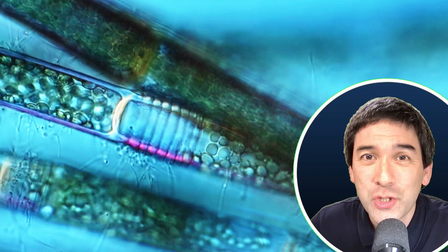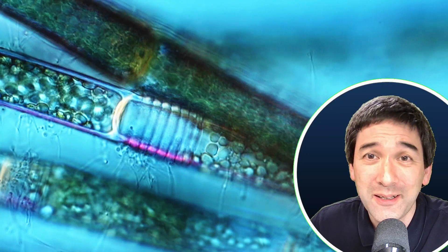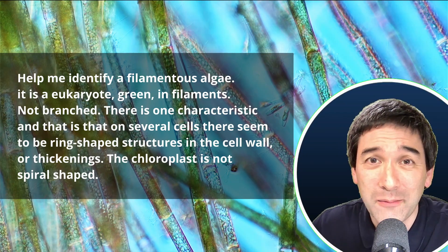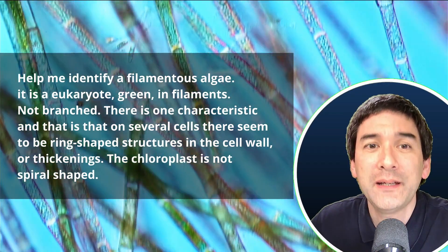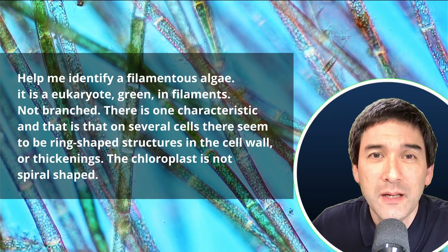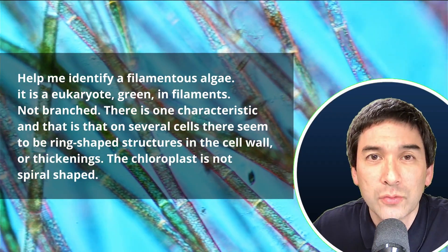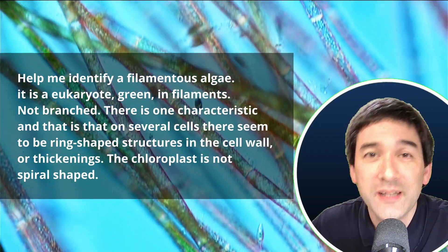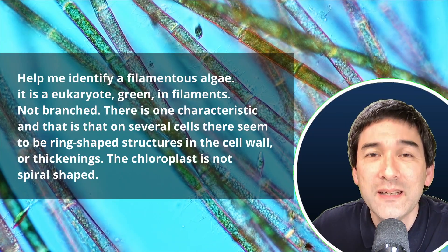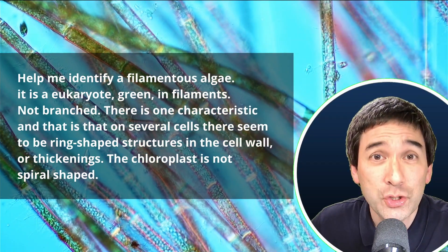First, go into ChatGPT and get some names and then type in the names and then basically hope to be able to identify it. And this is what I typed in here. So I've typed, help me identify a filamentous algae. That's of course something that I already knew, that it's a filamentous algae. It's a eukaryote, obviously. It's green, obviously, right? And it's in filaments.